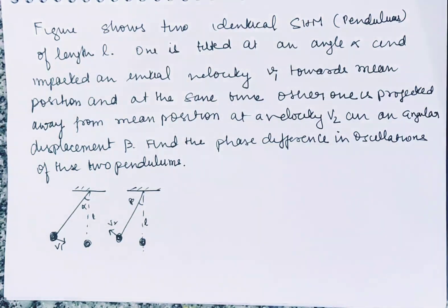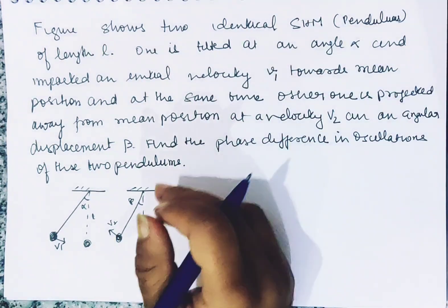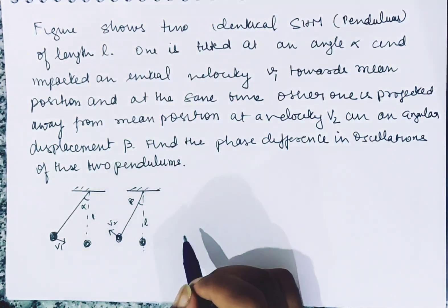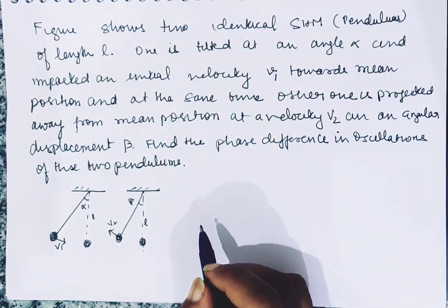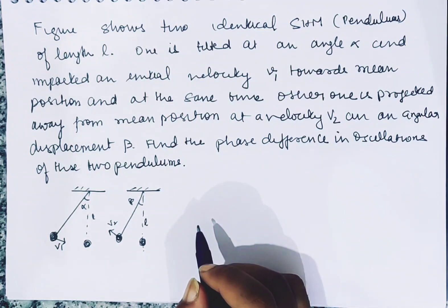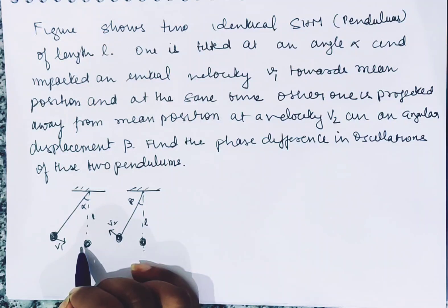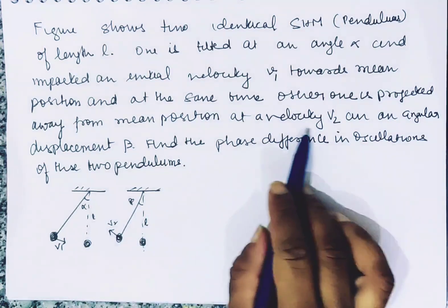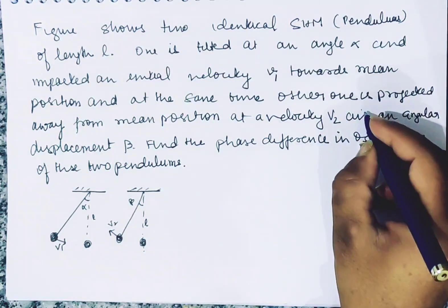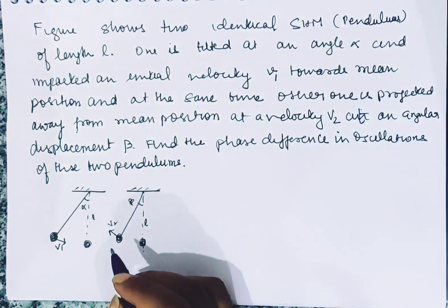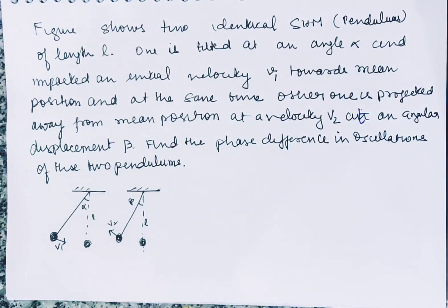Favour shows two identical SHM pendulums of length L. One is tilted at angle alpha and given an initial velocity v1 towards the mean position. At the same time, the other is projected away from the mean position at velocity v2 at an angular displacement beta. Find the phase difference in the oscillation of the two pendulums.